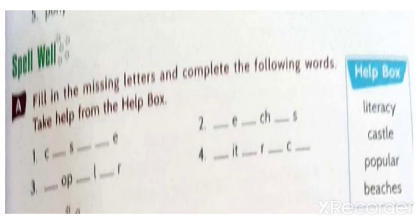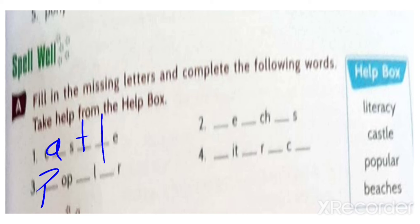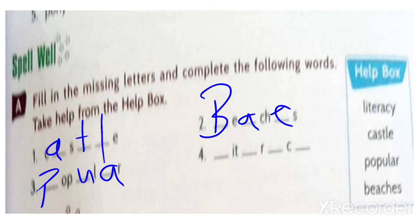Find the missing letter and complete the following words. The first one is castle: C-A-S-T-L-E. People also pronounce it 'castle'.